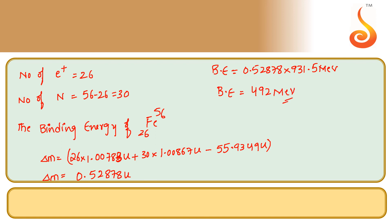The binding energy of the iron nucleus is 492 mega electron volts.